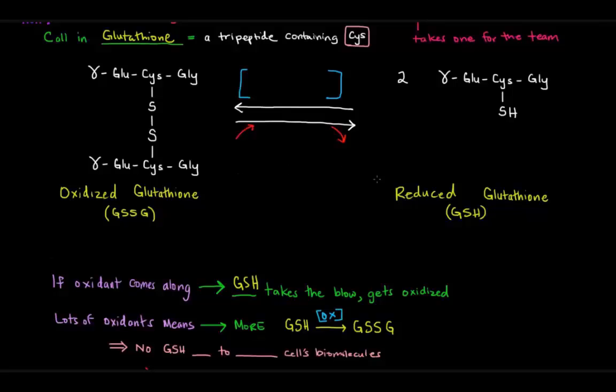So, what if this keeps happening? If there are a bunch of oxidants, they turn all of our GSH into GSSG. So, now there's no more reduced glutathione left to protect the cells' biomolecules. There's no GSH left to protect cells' biomolecules. That's a bad thing. So, how do we solve this?